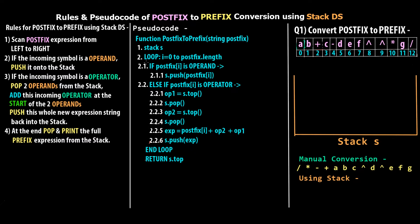Now let's apply this pseudocode to our existing postfix string. Step 1: we create the empty stack S. Step 2: we loop from i = 0. At i = 0, postfix[0] is 'a', which is an operand, so we push 'a' onto the stack. 'a' is now the top of the stack.